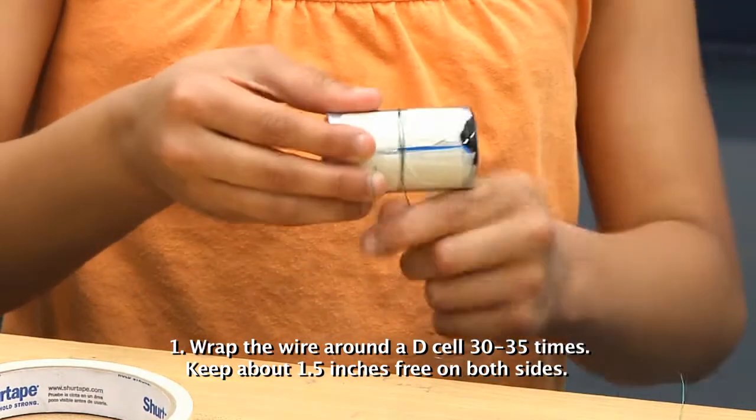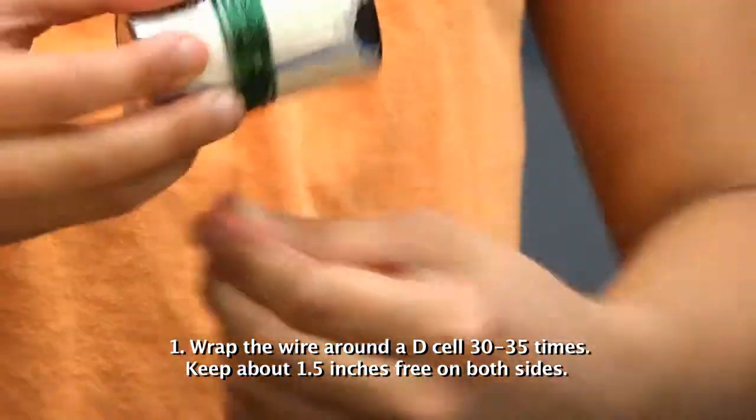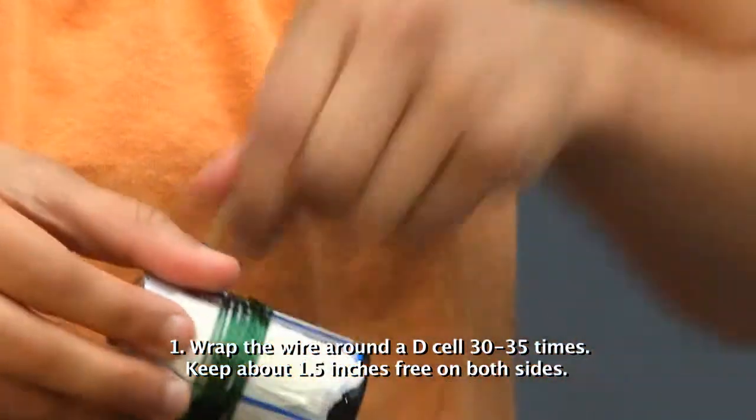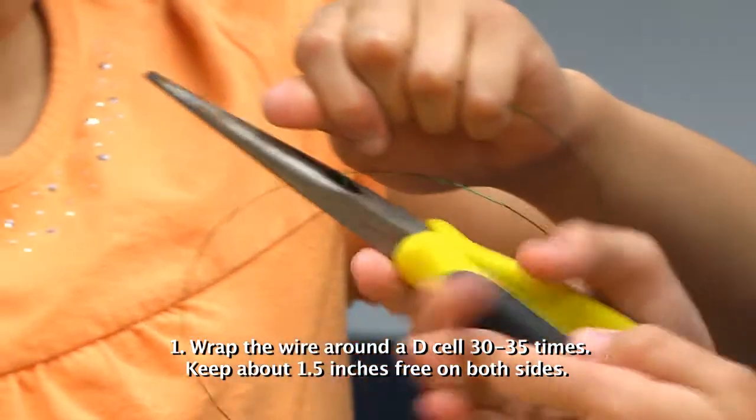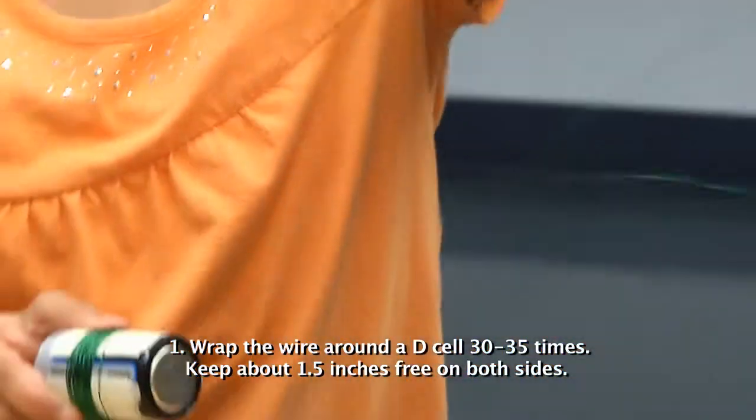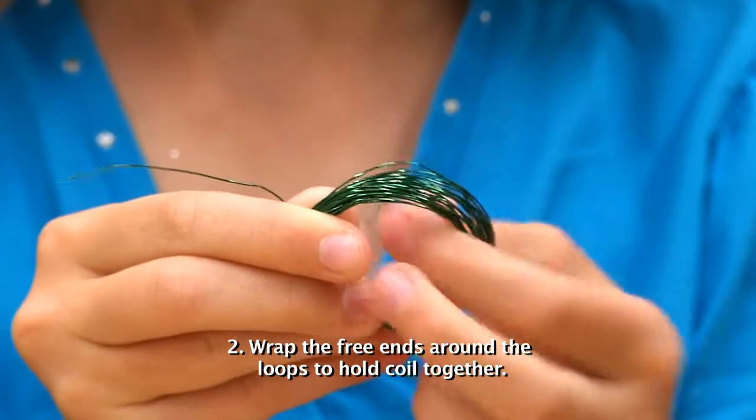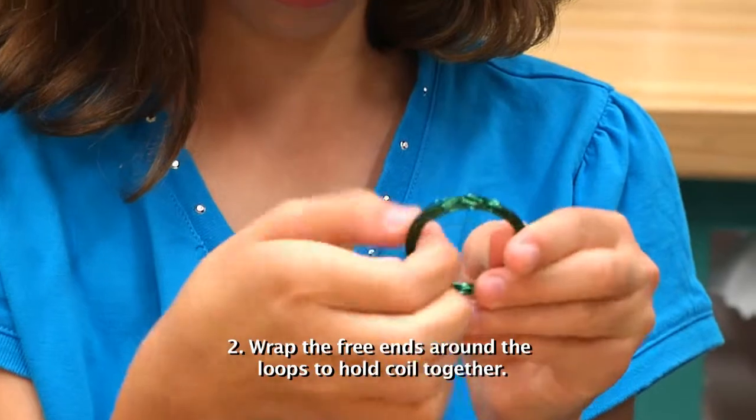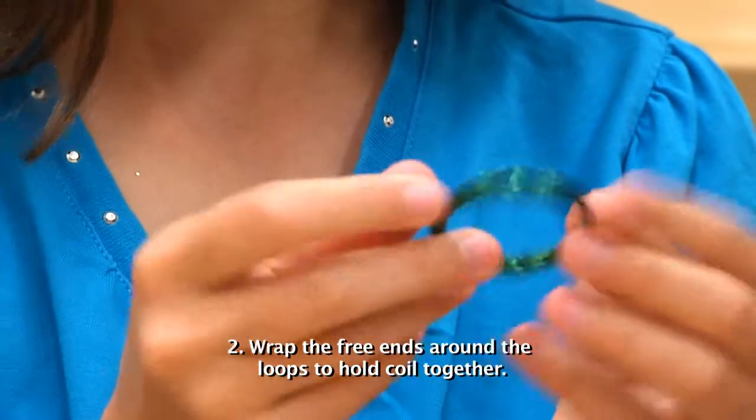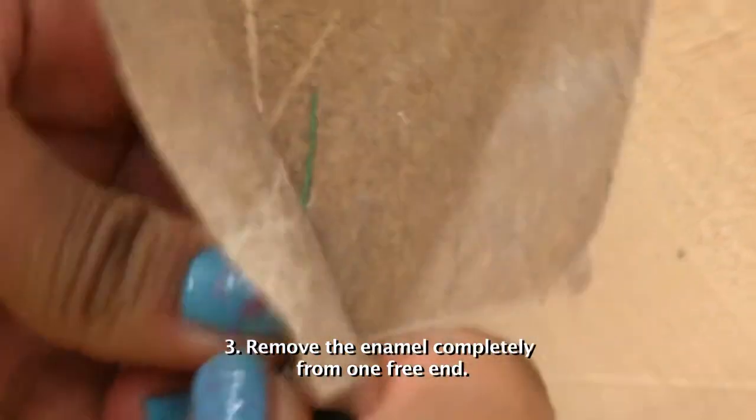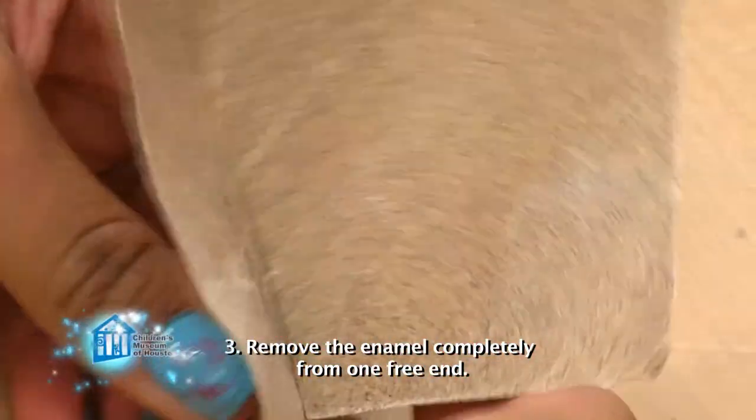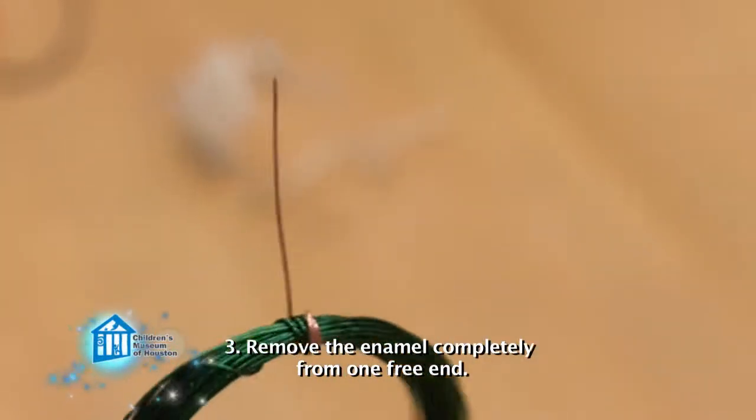First, wrap the enameled wire around the D-cell battery about 30 to 35 times and cut off the rest, making sure to leave about 1½ inches free on either side. Wrap the free ends around the loops on opposite sides to hold the coil together, leaving about ¾ inch free on either side. Using the sandpaper, remove the enamel completely from one of the free ends.